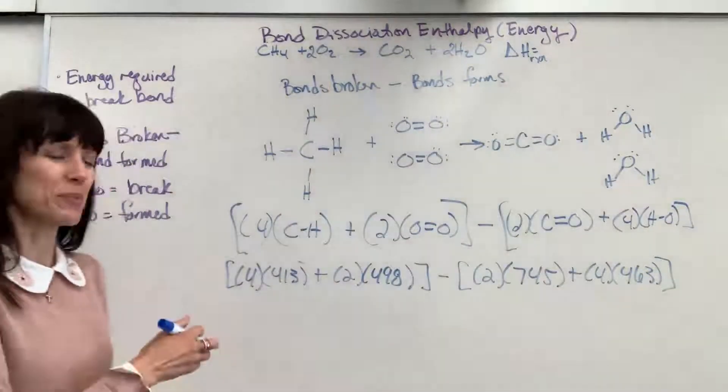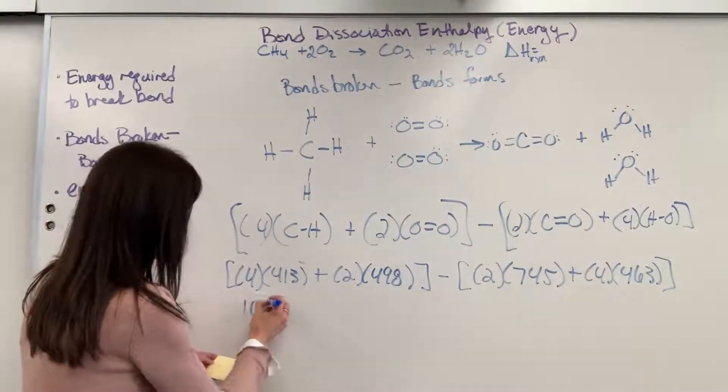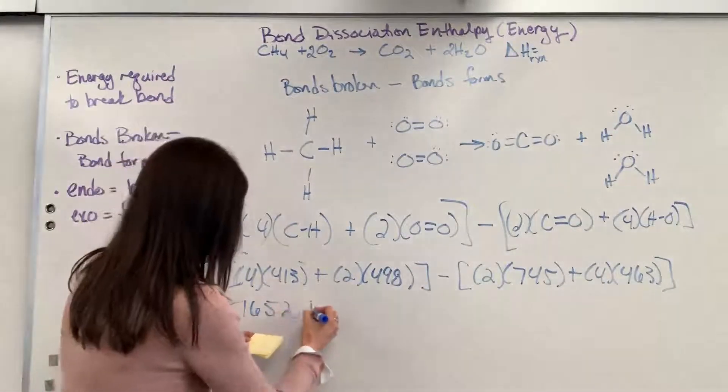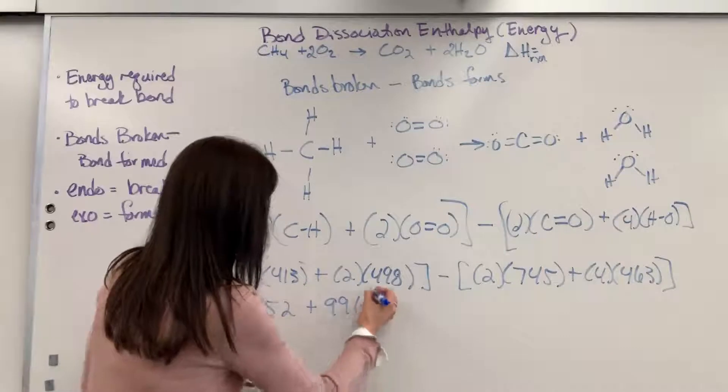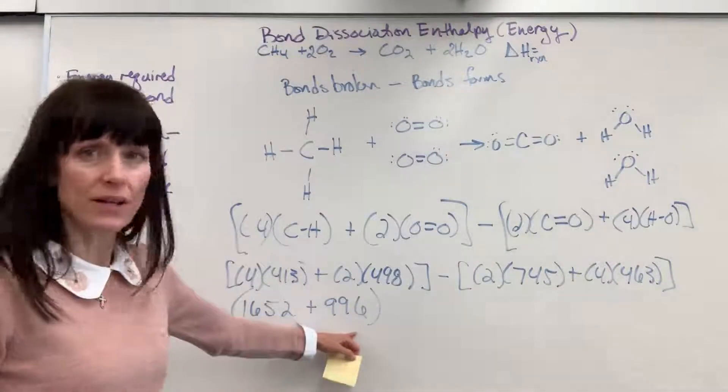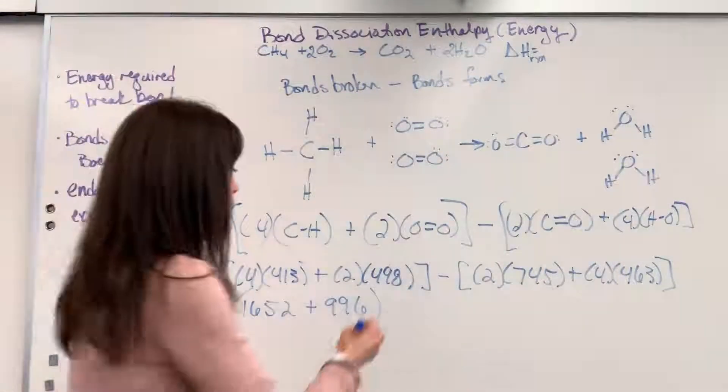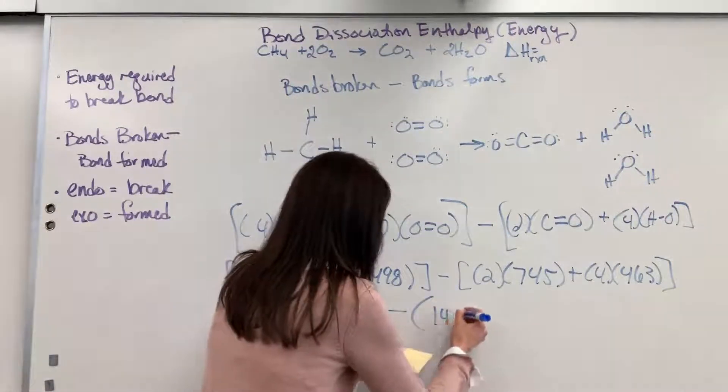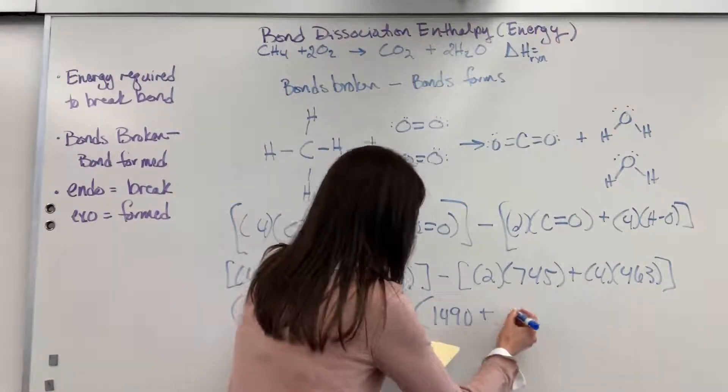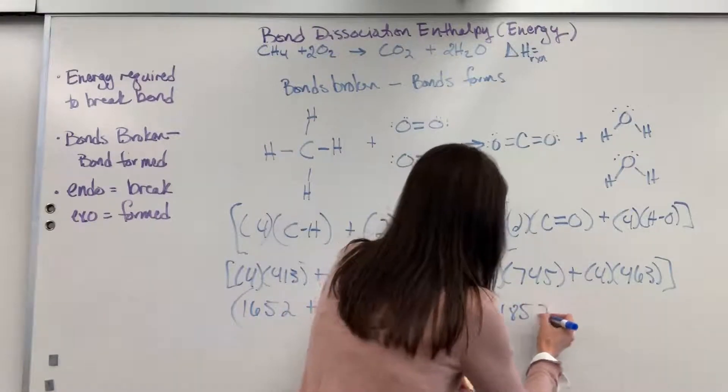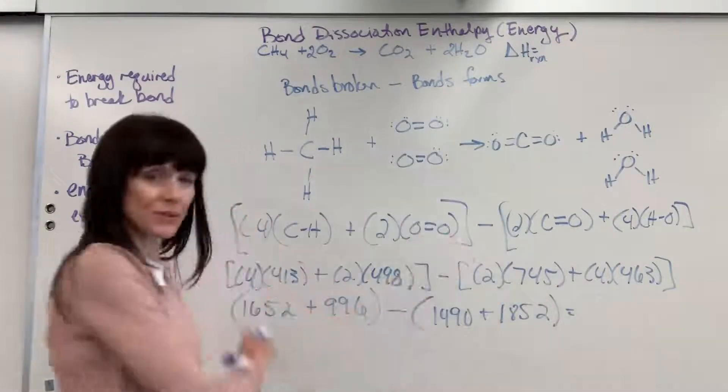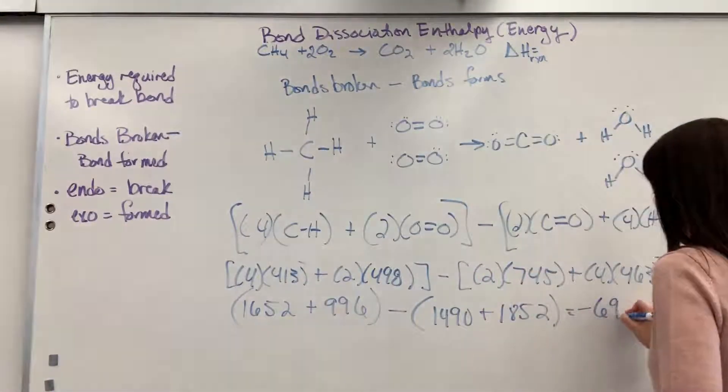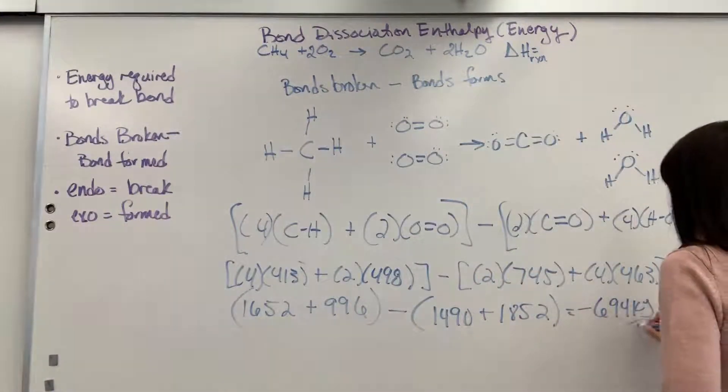So if we put all these numbers together, multiply it out, we have 1652 plus 996. Again, that's the total energy required to break bonds. Minus, this is going to be the energy released when those bonds are formed. 1490 plus 1852. So do this math. Everything said and done, negative 694 kilojoules per mole.